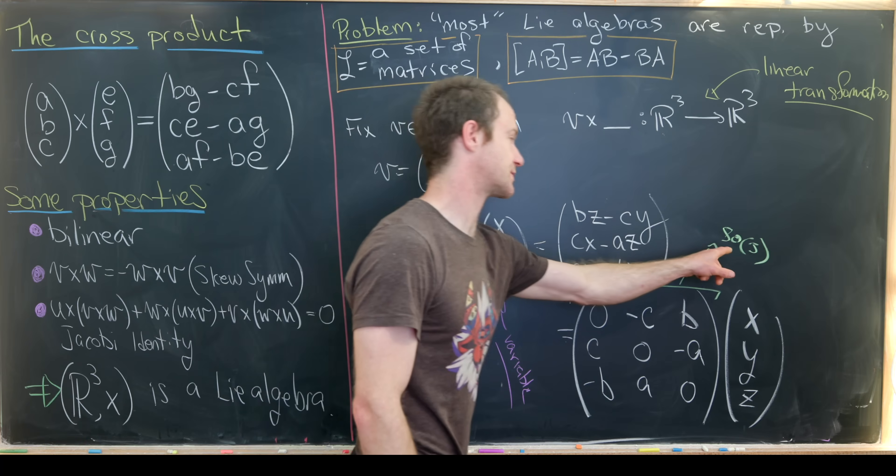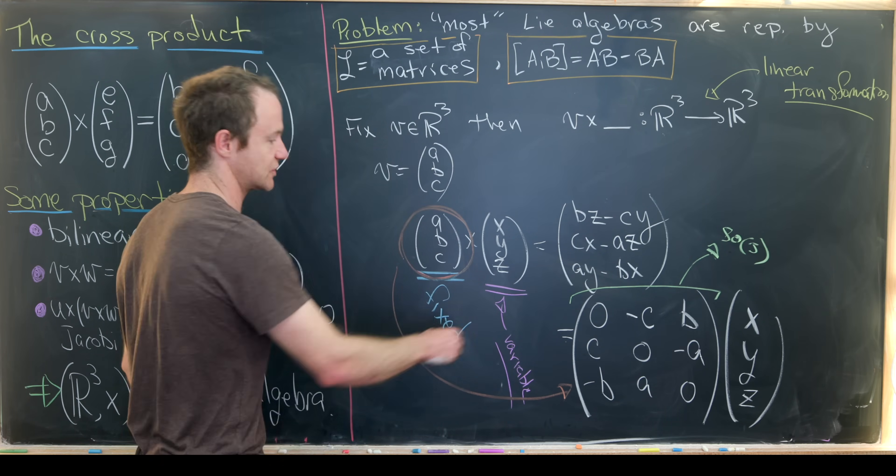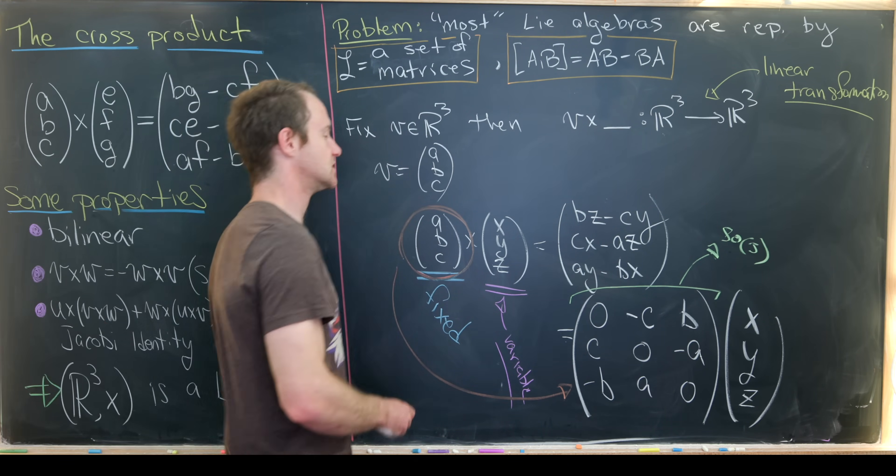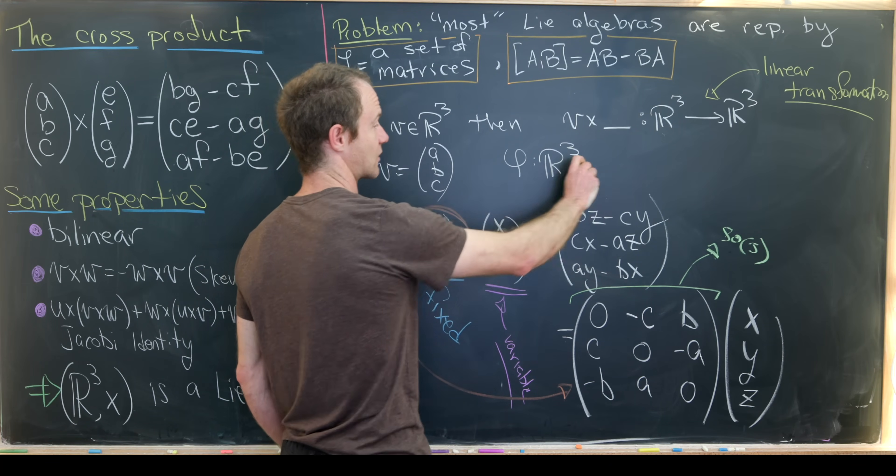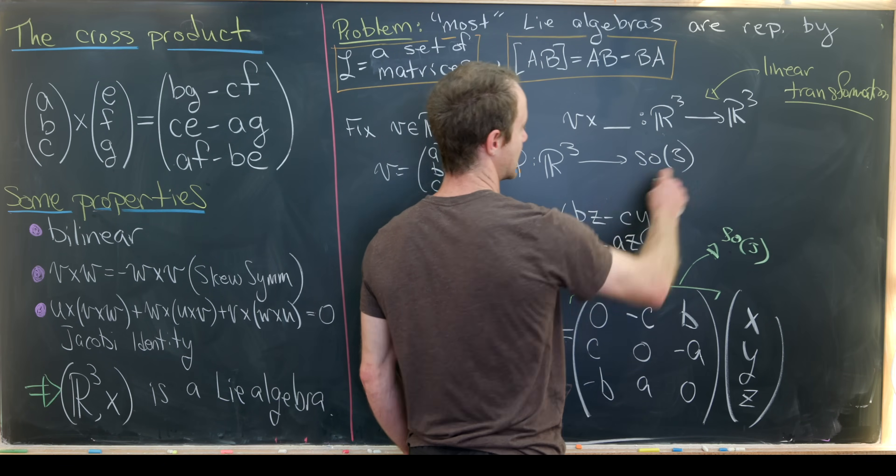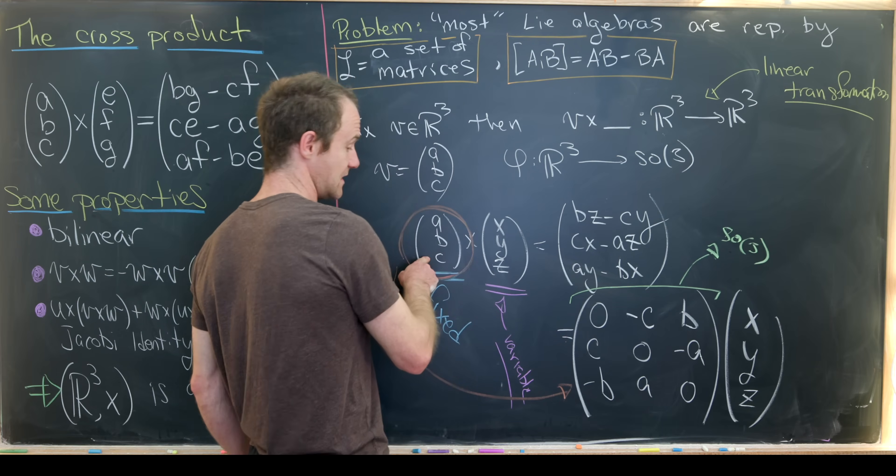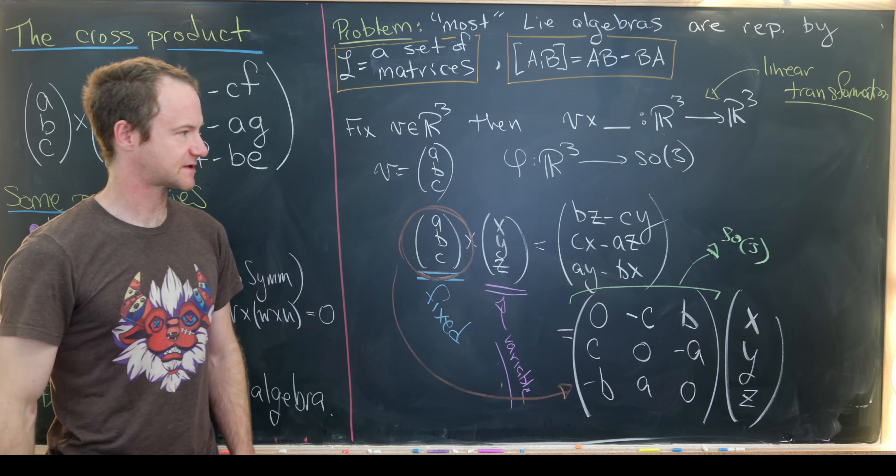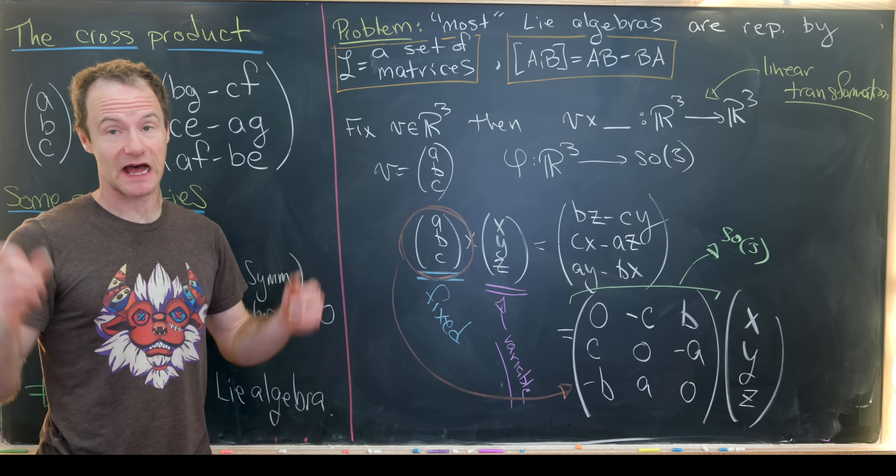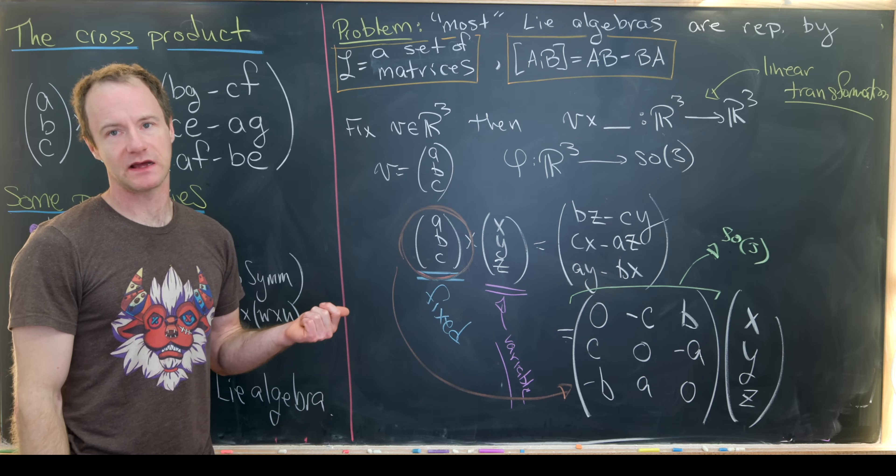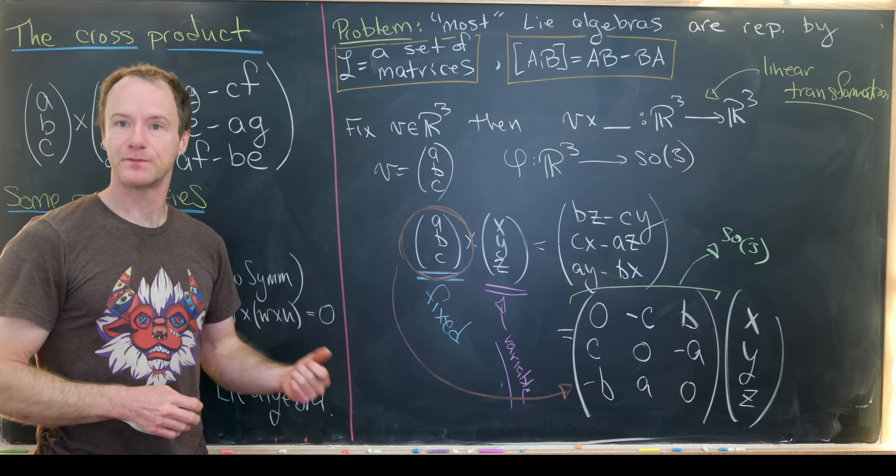So this observation gives us some sort of idea for how we should define our map. It tells us which Lie algebra should be on the right-hand side. So what we'll end up with is phi goes from R3, thought of as a Lie algebra with the cross product, to SO3, thought of as a Lie algebra or a matrix Lie algebra with the commutator. And this sends ABC to this three-by-three matrix. So let's start the next board with the definition of this map.